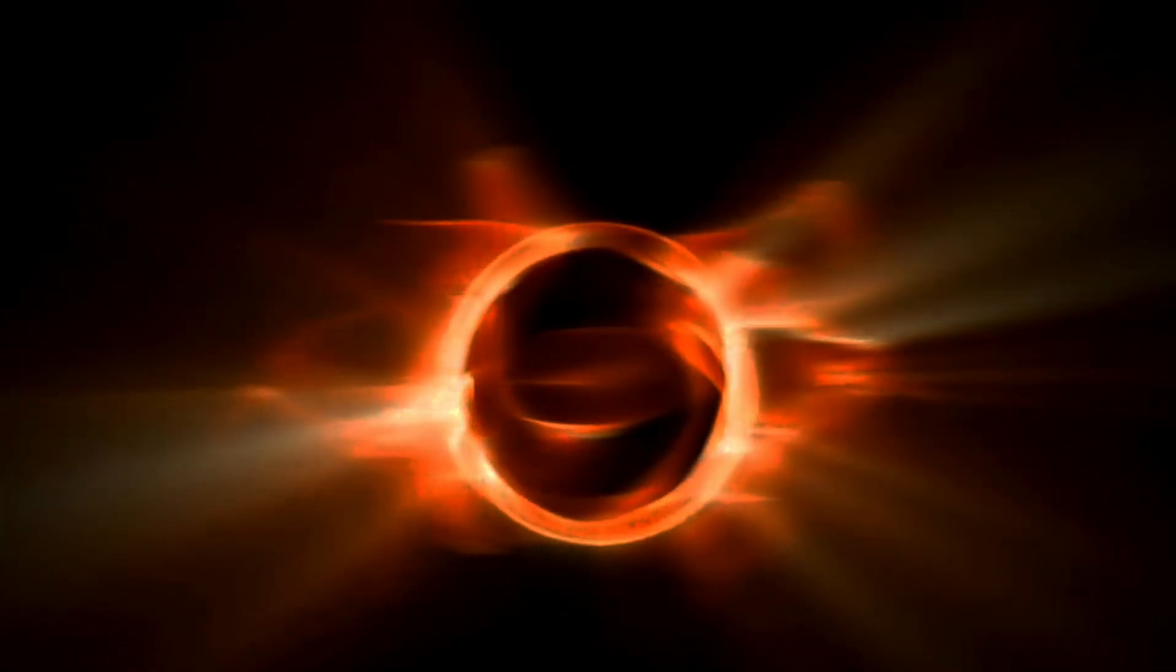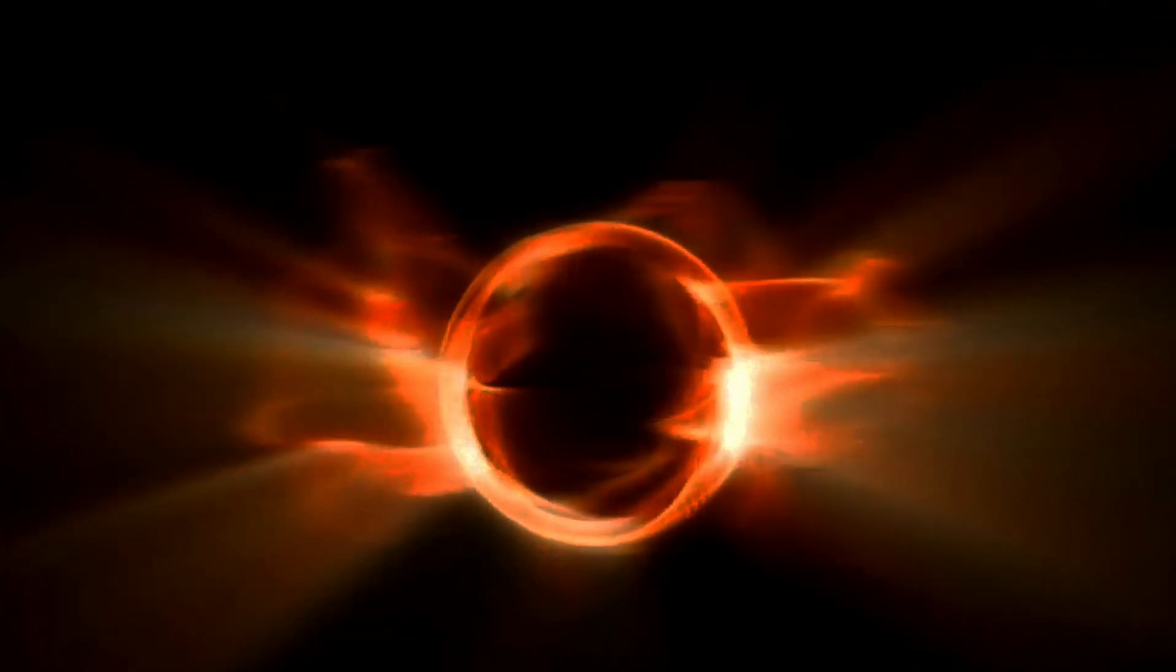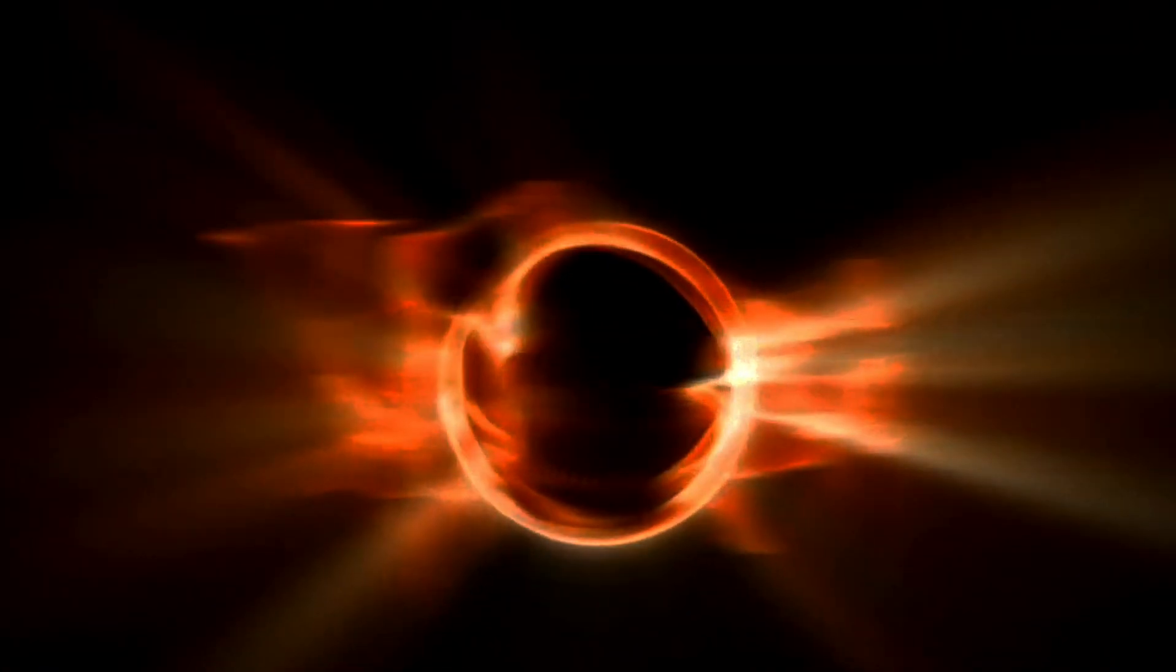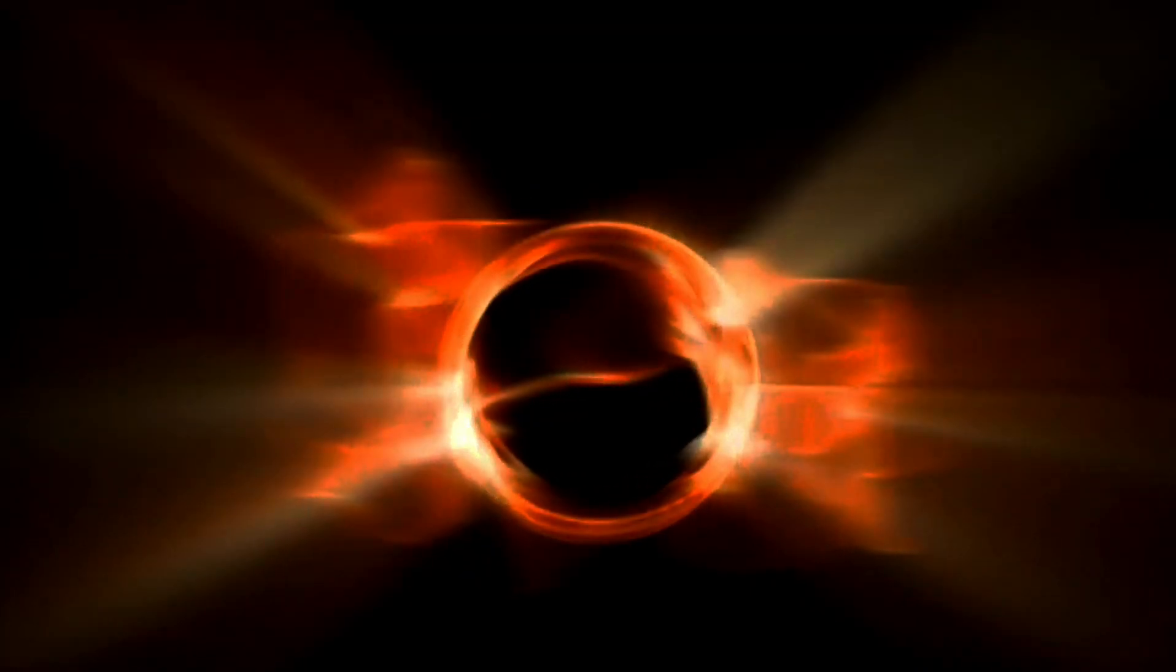Black holes have what's called an event horizon, a region that once anything from our universe crosses over this imaginary surface, we can no longer receive signals from it. Typically, we think of black holes as the volume inside the event horizon, the region from which nothing, not even light, can escape.